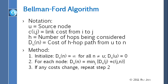Distance vector means you tell your neighbors about your distance to the whole world. Link state means you tell the world about your neighbors. So in distance vector, everybody exchanges their complete table with all of their neighbors — neighbors only, not everybody else.